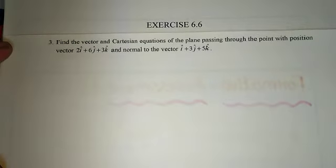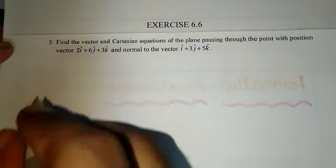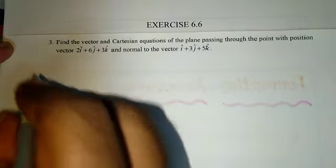Hi students, now we have a problem. Exercise 6.6, third term. Find the vector and Cartesian equations of the plane passing through the point with position vector 2î + 6ĵ + 3k̂ and normal to the vector î + 3ĵ + 5k̂.